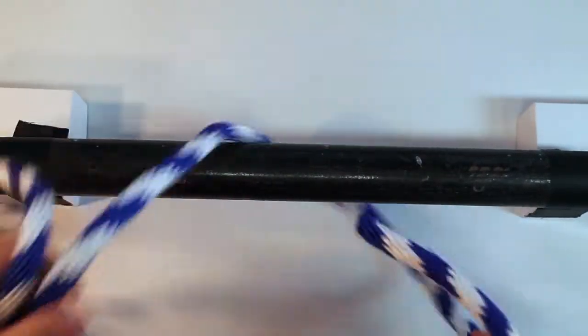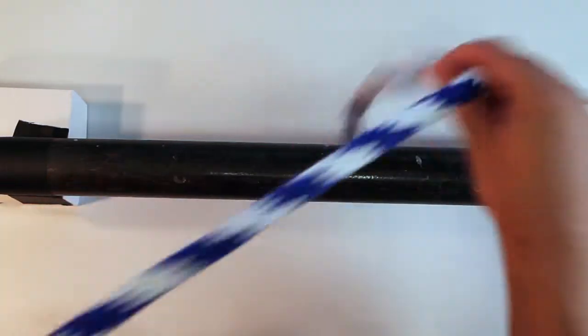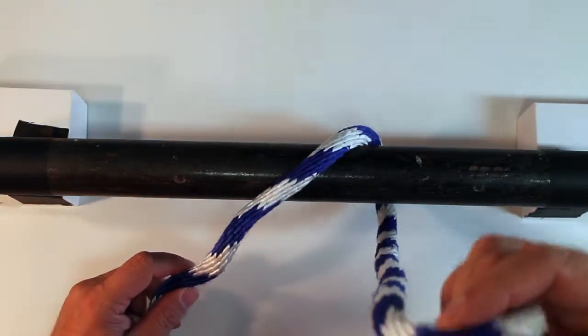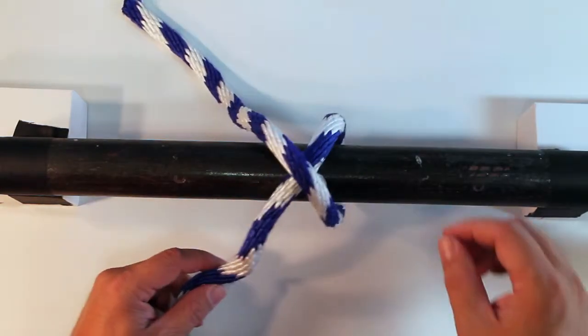Alright, so for the clove hitch, the first thing you're going to do is wrap the rope around the batten once, and then you're going to make an X.